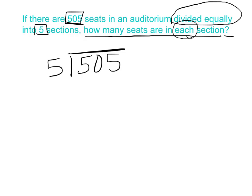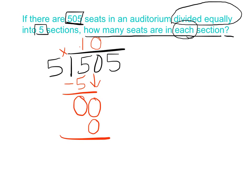5 goes into 5 how many times? One time. I'm going to multiply — 5 times 1 is 5. I'm going to subtract — 5 minus 5 is 0. Bring down this 0. I have 0. 5 goes into 0 zero times, so I have to put a 0 up in my quotient — I can't leave that spot blank; I must fill it in with a 0. I'm going to multiply — 5 times 0 is 0. Subtract — that gives me 0. Bring down my 5. 5 goes into 5 one time. 5 times 1 is 5. Subtract — that is 0.